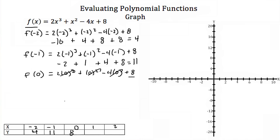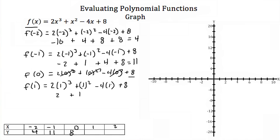Now let's try positive 1. We plug in 1 for x: 2(1)³ + 1² − 4(1) + 8. 1 cubed is 1, times 2 is 2. 1 squared is 1. 4 times 1 is 4, but we're subtracting it. Then add the 8. So our function value when x = 1 is 7.